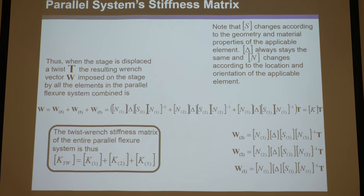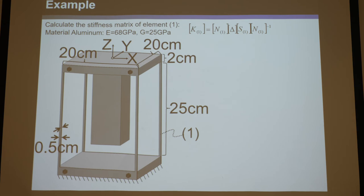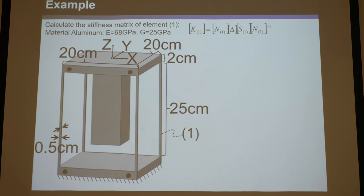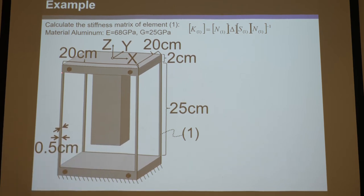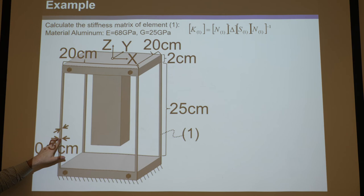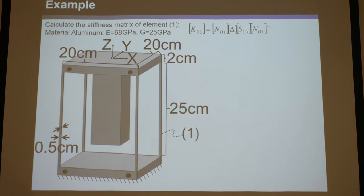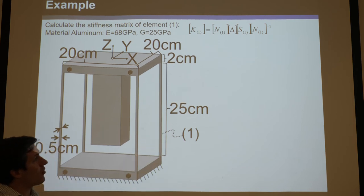Let's do an example. Take this system and conveniently define the global coordinate system at the center of the top square, on the top surface. X, Y, and Z point perpendicular to the flat surfaces. The square is 20 centimeters on a side, the elements are 2 centimeters down, 25 centimeters long, and 0.5 centimeters wide and thick — all four wires are the same. The entire system is aluminum with Young's modulus 68 GPa and shear modulus 25 GPa.